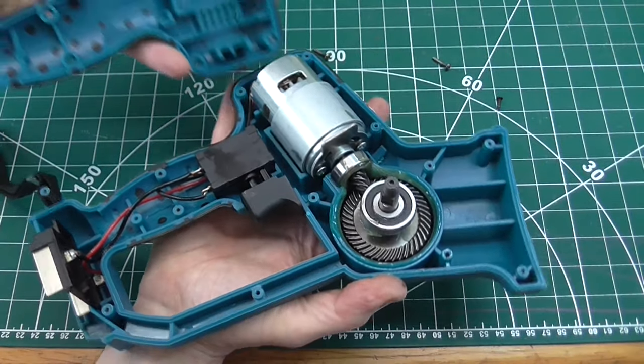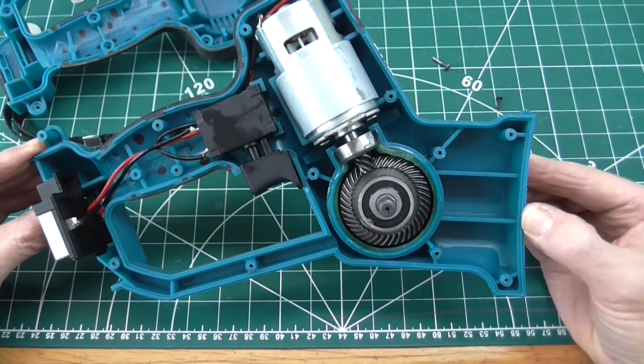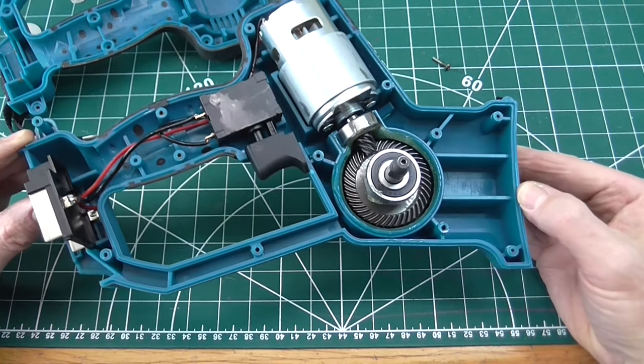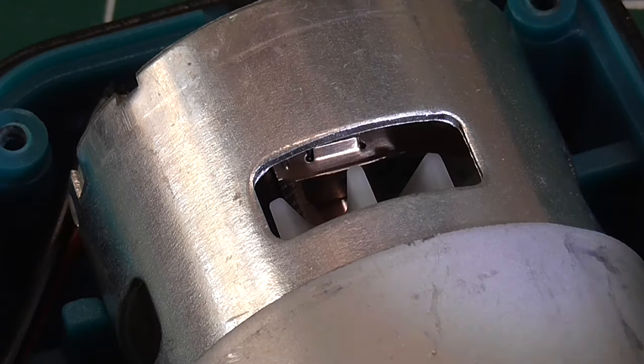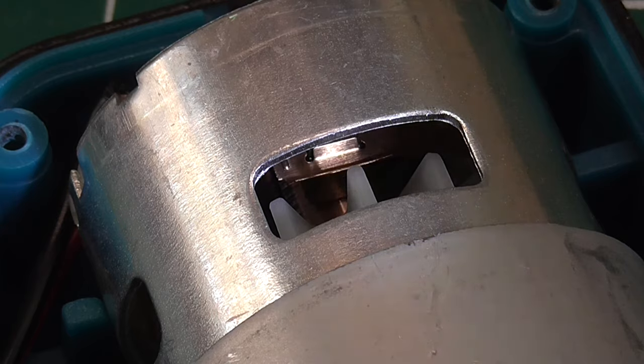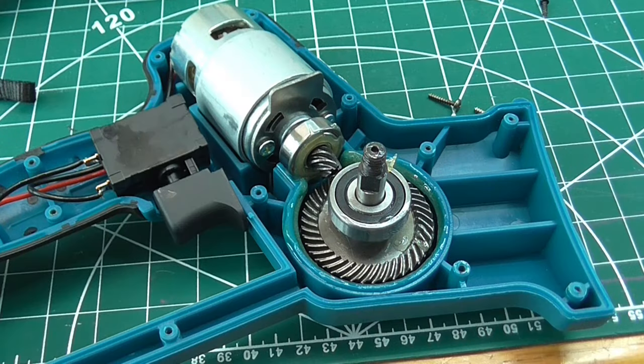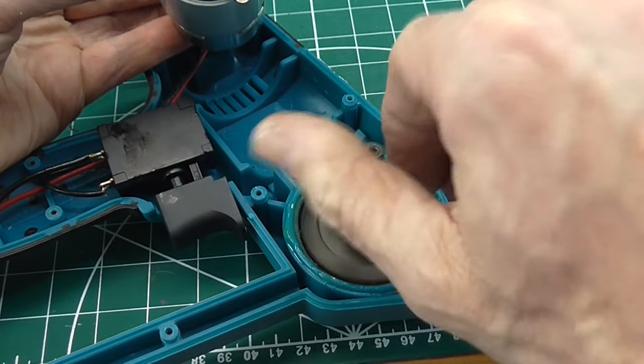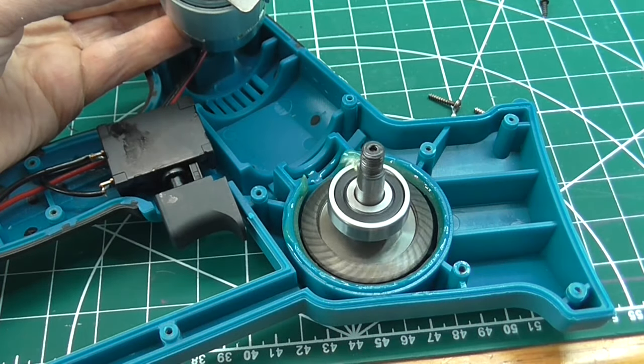There's not much to see inside. A switch, a motor, and a pair of gears. That's a brushed DC motor. There's one of the brushes. There is a decent sized sealed ball bearing on the shaft. It feels like there's one on the other side too. But I can't get it out to see.